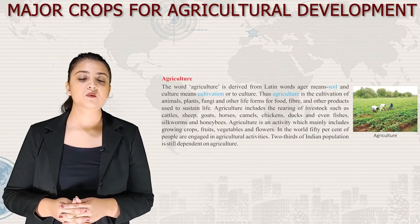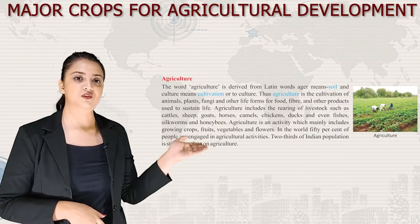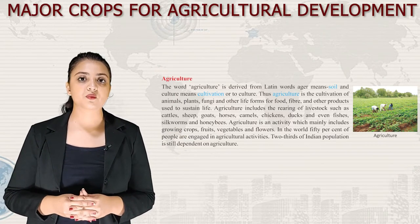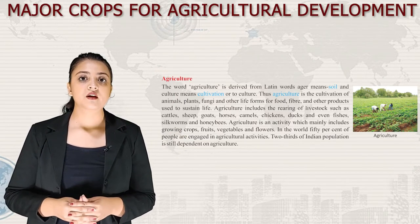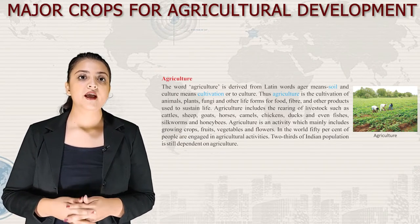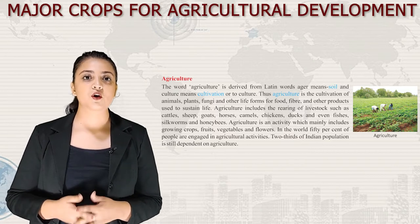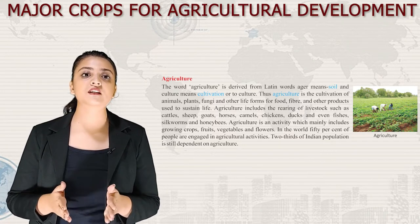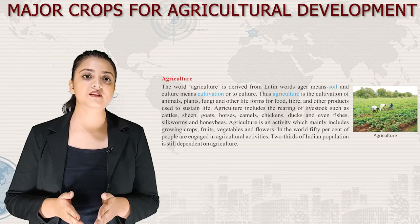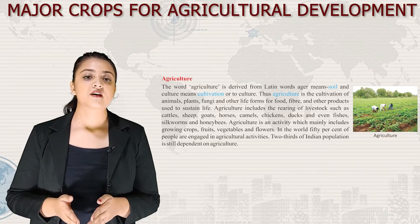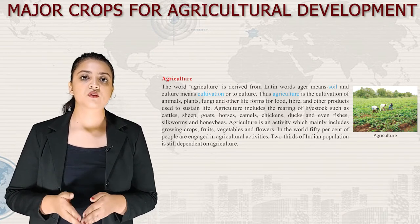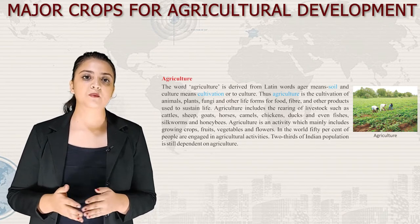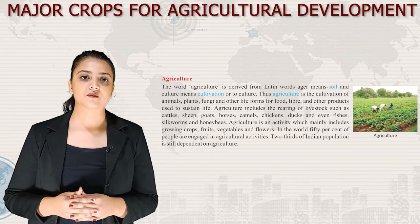Now let's start with agriculture. The word agriculture is derived from Latin words: ager means soil and cultura means cultivation. Thus, agriculture is the cultivation of animals, plants, fungi and other life forms for food, fibre and other products that are used to sustain life.